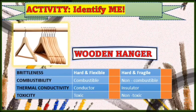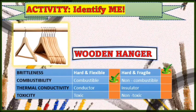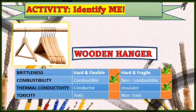Next, to identify its property, is a wooden hanger. Let's assess the brittleness of a wooden hanger. Is it hard and flexible or hard and fragile? Yes, it is hard and fragile. How about its combustibility? Is it combustible or non-combustible? Yes, that is combustible because it's a wooden hanger — it's made from wood. How about its thermal conductivity? Is it a conductor or insulator? Yes, that is an insulator because it's wood. How about its toxicity? Toxic or non-toxic? Yes, that is non-toxic.